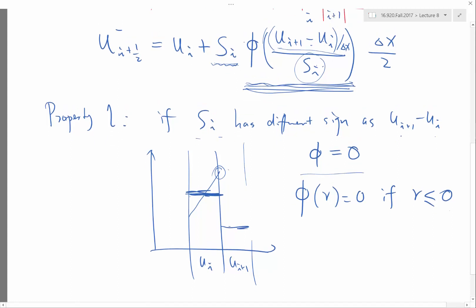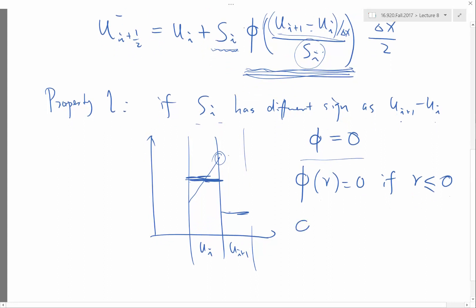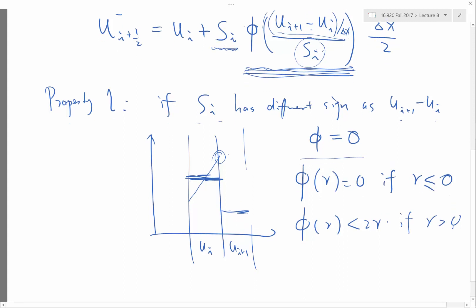Also, even if this r is positive, my phi of r cannot be greater than 2r. So even if r is positive, because if phi of r is greater than 2r,